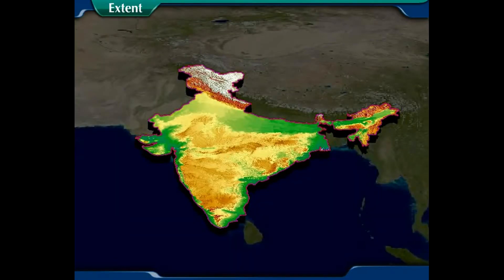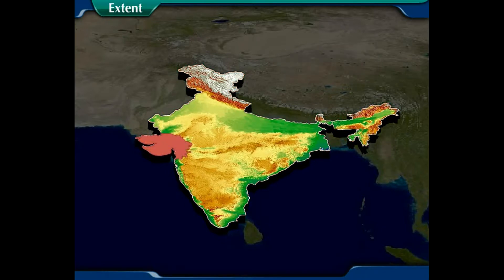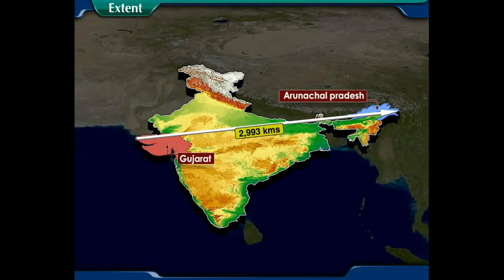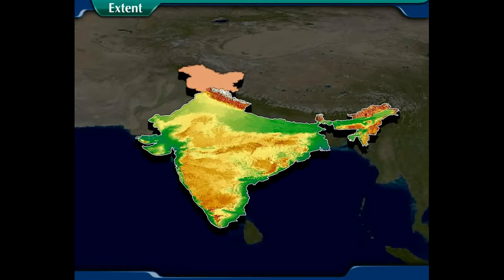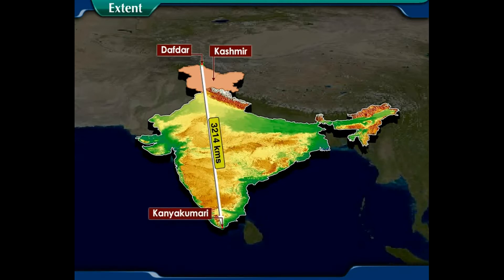The total area of India is 32,87,263 square kilometers. The distance between the westernmost point in Gujarat and easternmost point in Arunachal Pradesh is about 2,993 kilometers, while the distance between the northernmost point in Kashmir i.e. Daftar and the southernmost point of the mainland i.e. Kanyakumari is about 3,214 kilometers.